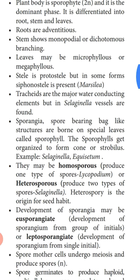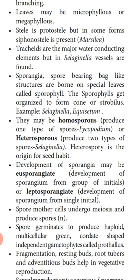Sporangia are spore-bearing bag-like structures. They are borne on special leaves called sporophylls. The sporangia contain spores, and the sporophylls are arranged in the form of a cone or strobilus. Examples of strobilus formation can be found in Selaginella and Equisetum.